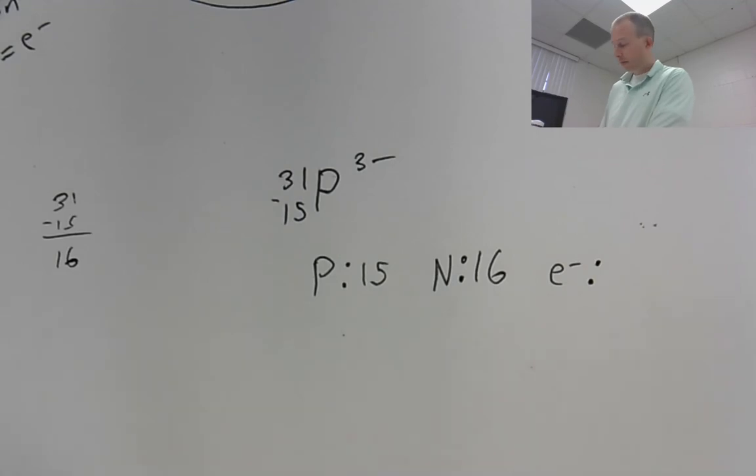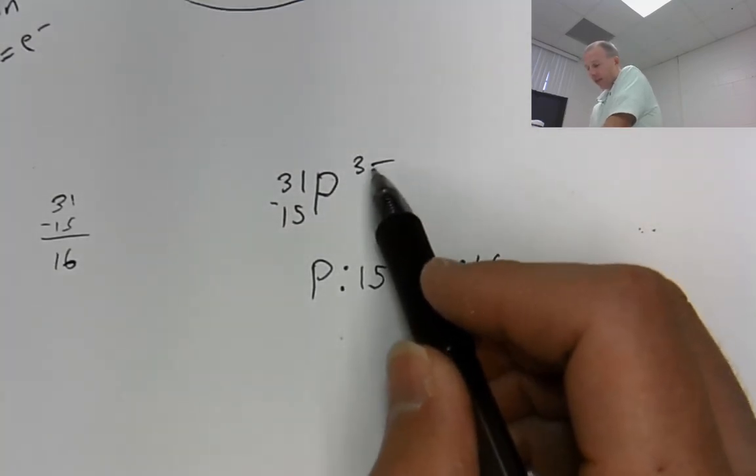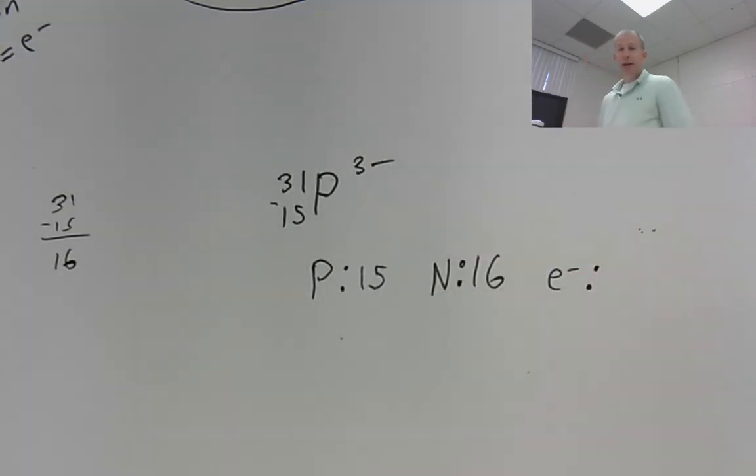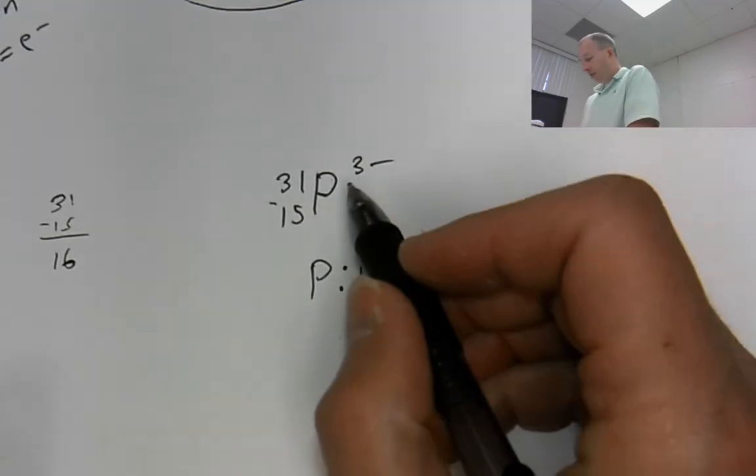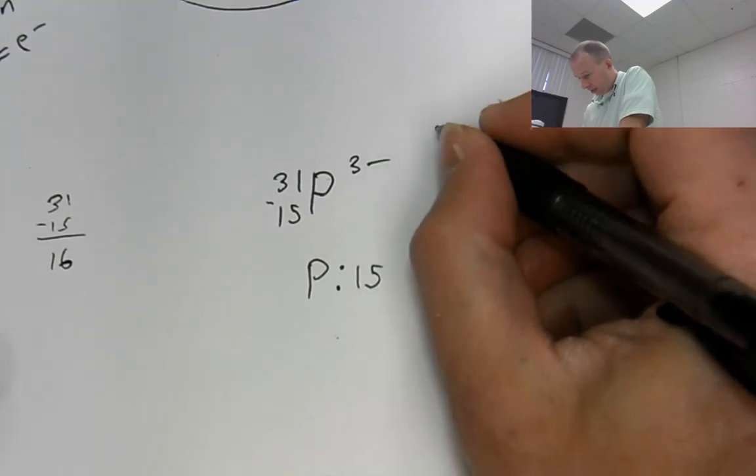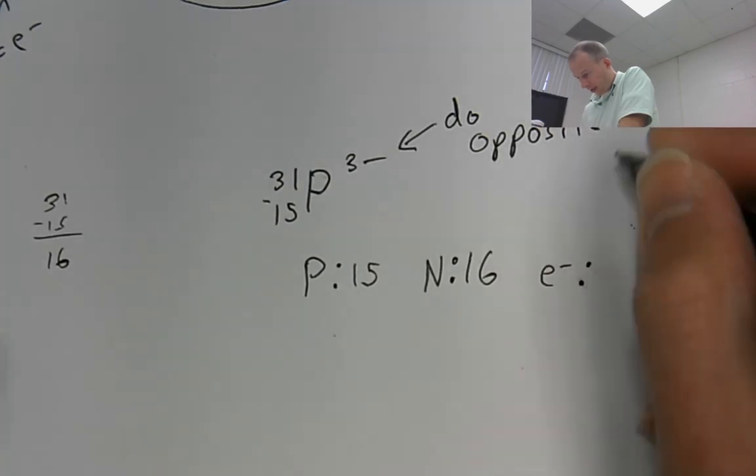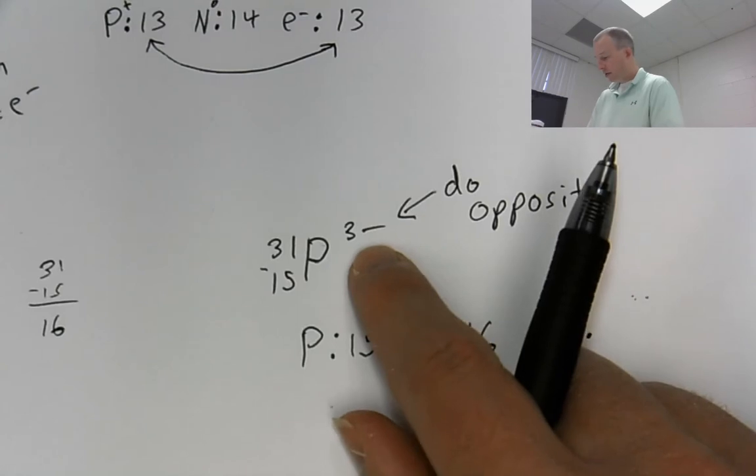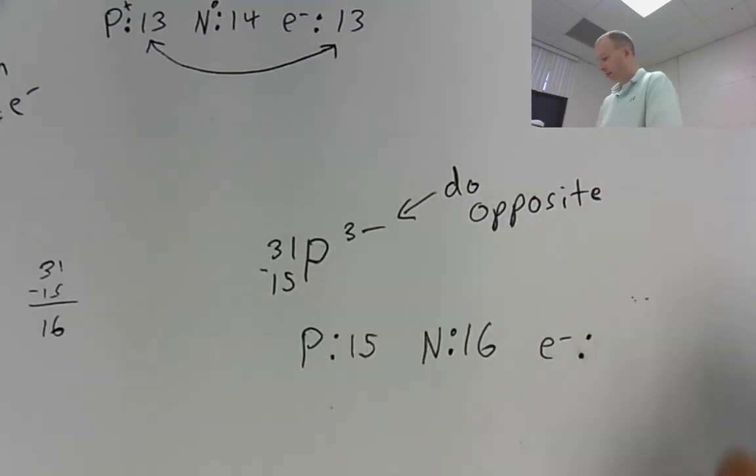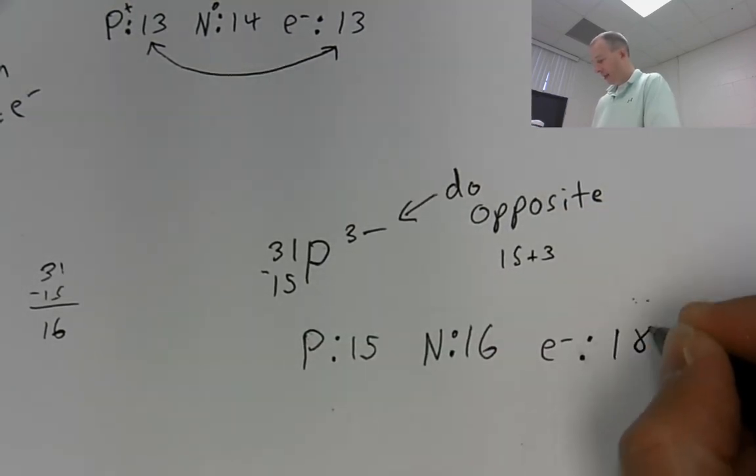Now the electrons. This is the part that can be a little confusing. I'm going to try to tell you a really simple way to figure it out, though. So if you have a negative 3 charge, all right, that implies that you have more negatives than positives. So you have three more negatives than you do positives. So that means that there are three more electrons than there are protons. So the simplest thing to do is just whatever this is, just do the opposite. Just do the opposite of that charge. So if it's a negative, you're going to add three to the protons. So if it's negative, you're going to do 15 plus three.